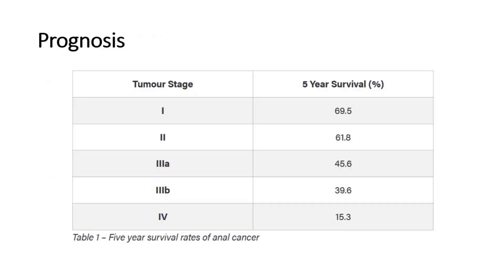The prognosis is related to the initial staging of the tumor. This table shows the five-year survival rate of patients who had anal cancer. The earlier the stage when it was diagnosed and treated, the higher the rate of five-year survival. That's all for this video. Thank you.